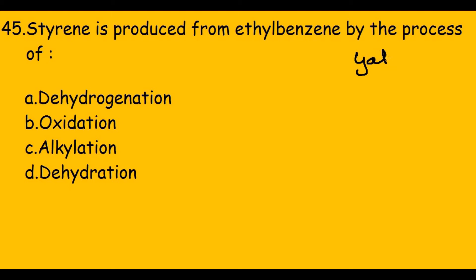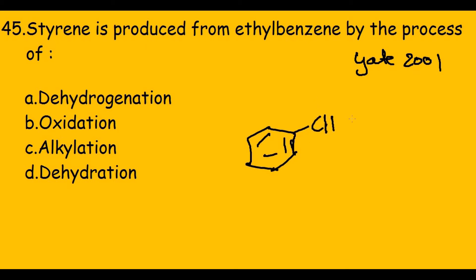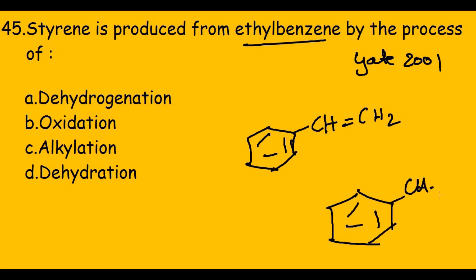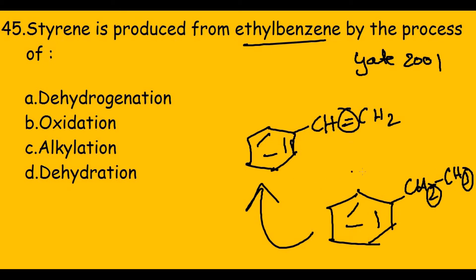This question was asked in GATE 2001: styrene is produced from ethyl benzene by the process of — looking at the structures, styrene has a C=CH2 group while ethyl benzene has a CH2–CH3 group. To go from ethyl benzene to styrene, I need to remove one hydrogen atom from each carbon to form the double bond. So clearly, the process is dehydrogenation.